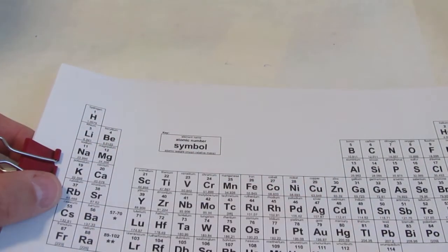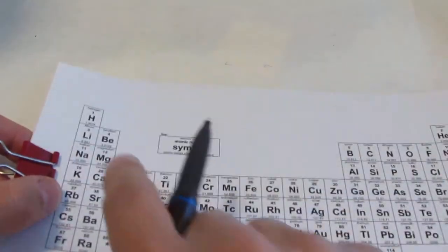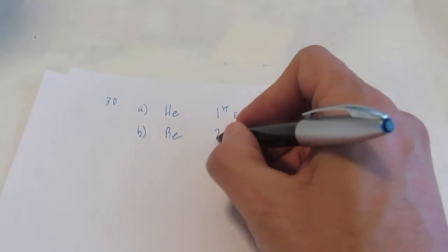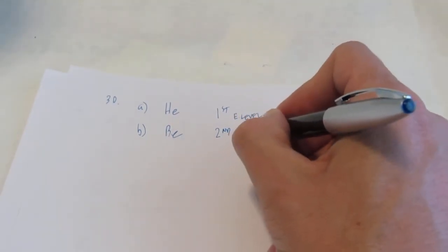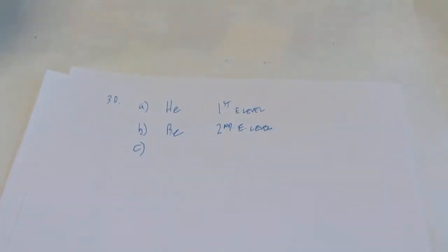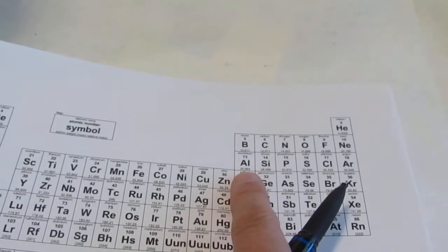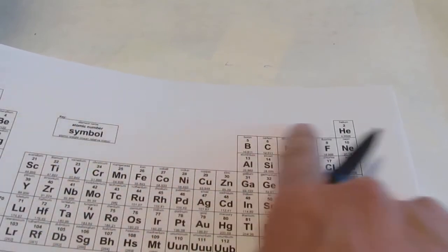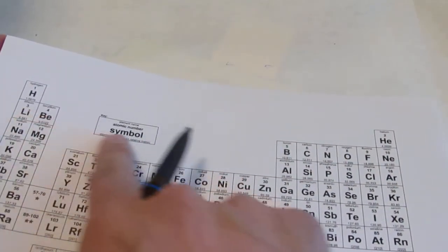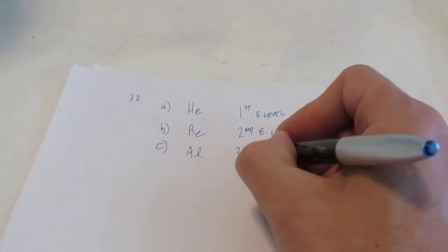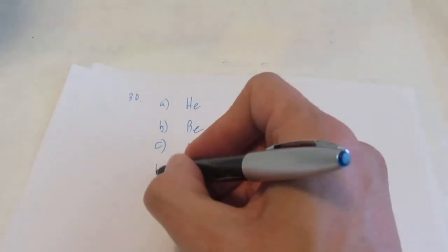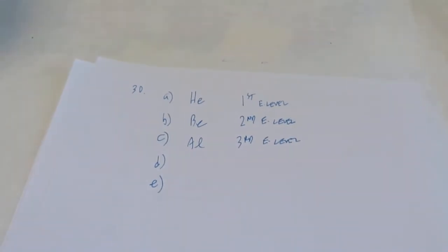Okay, letter B says, well, what about beryllium? So beryllium, if you take a look at your periodic table, is in the second period. So it has electrons not only in the first energy level, but it also has some in the second energy level. This is too easy, isn't it? And I'll do letter C for you, and we'll stop on that problem with that one. How about aluminum? So aluminum is right over here. You'll notice it's three rows from the top. It has electrons in the first energy level, the second energy level, and the third energy level. And you can do d and e all by your lonesome. Okay?